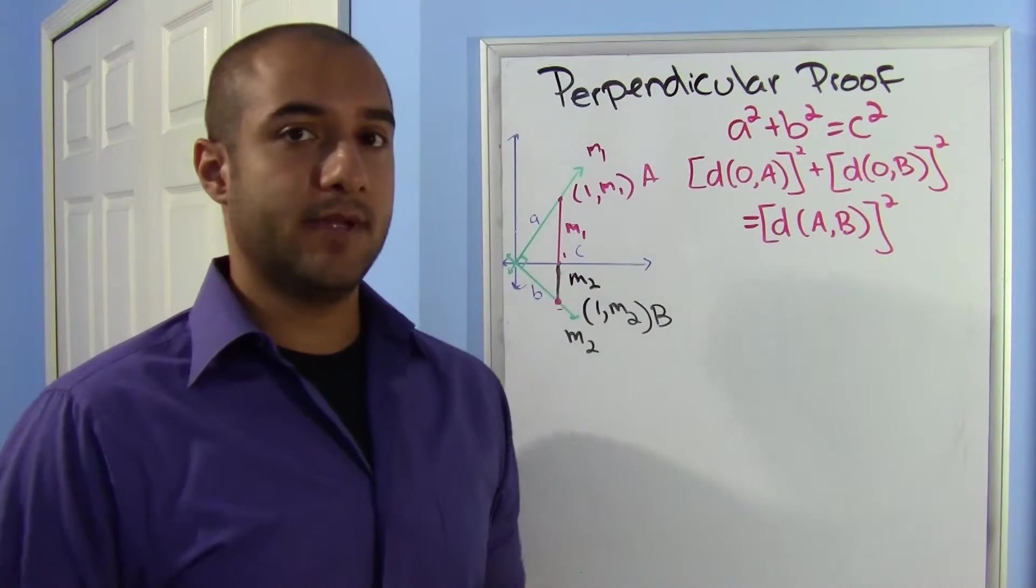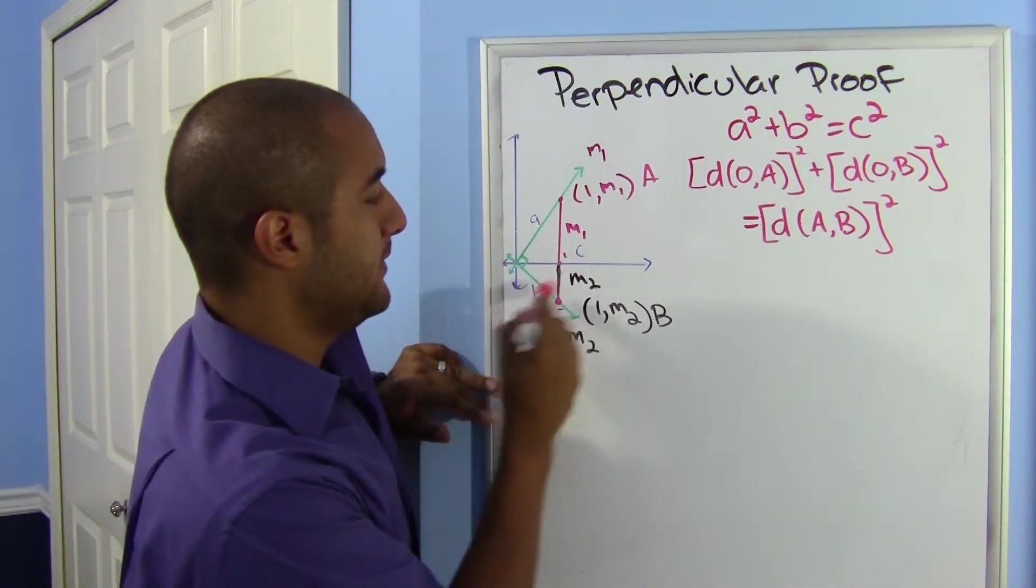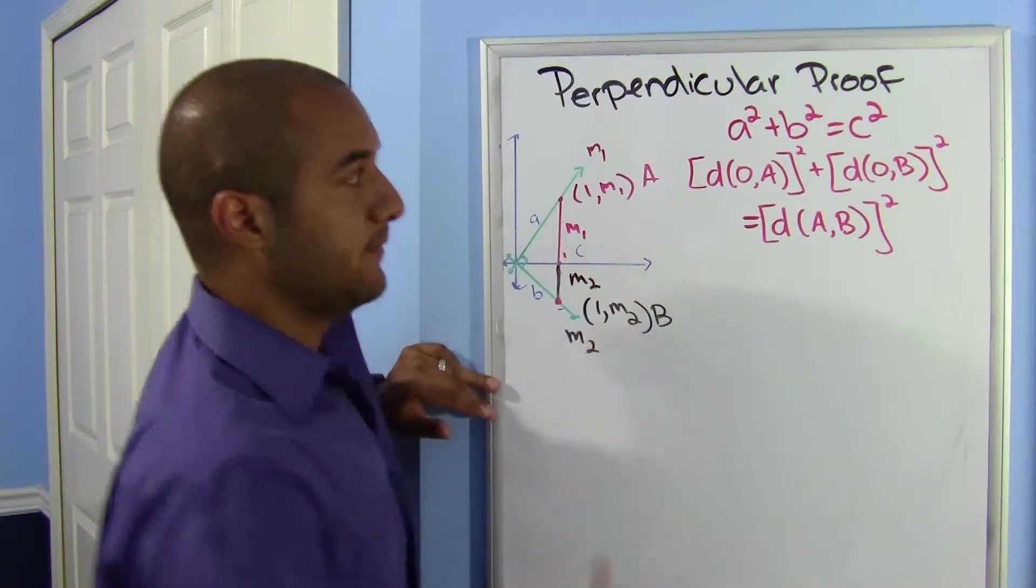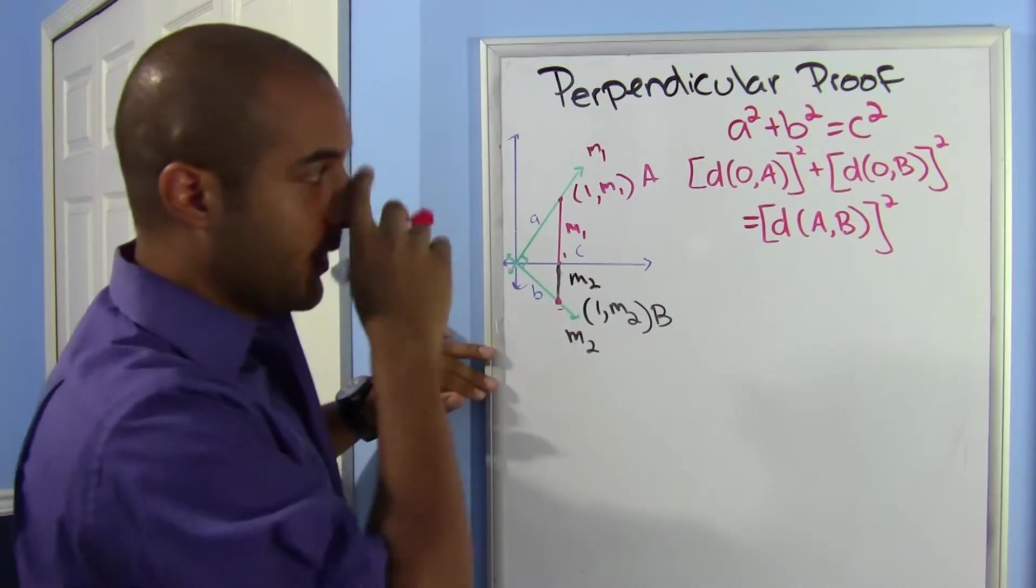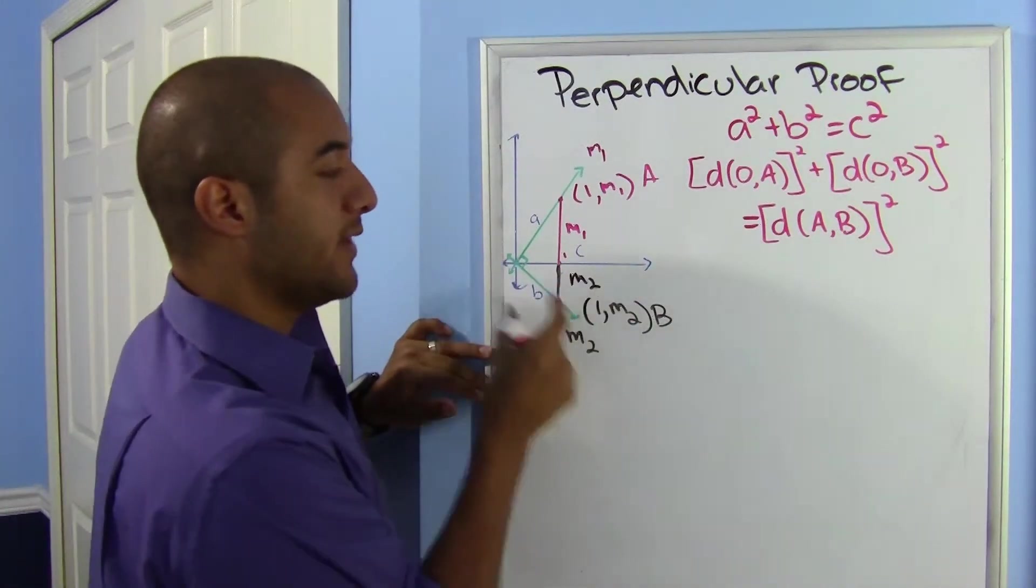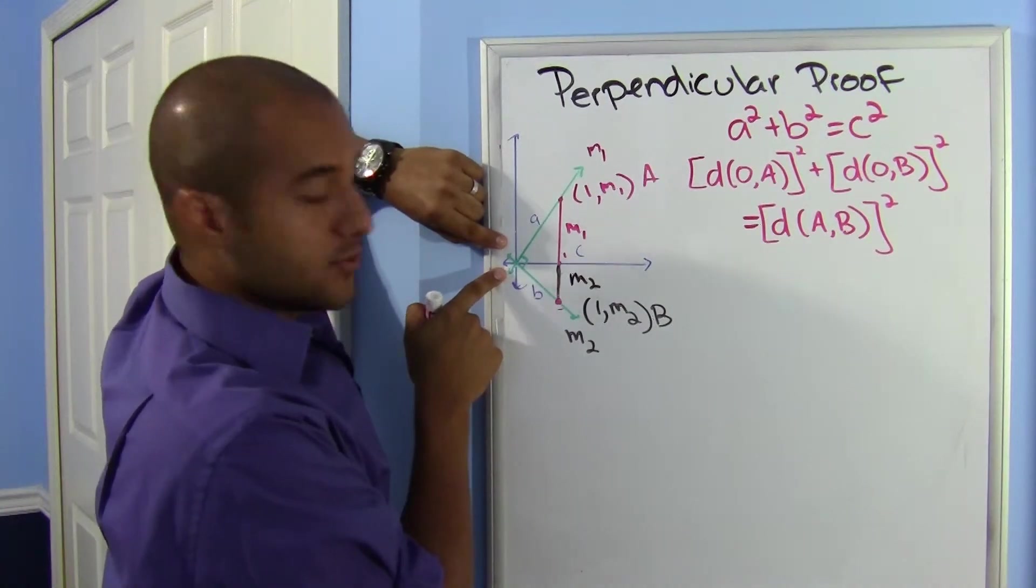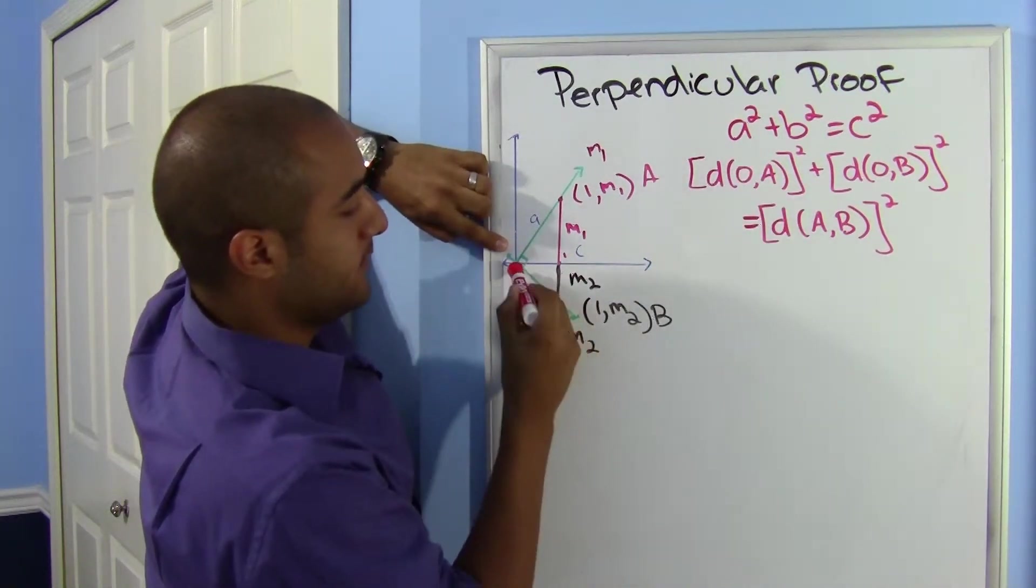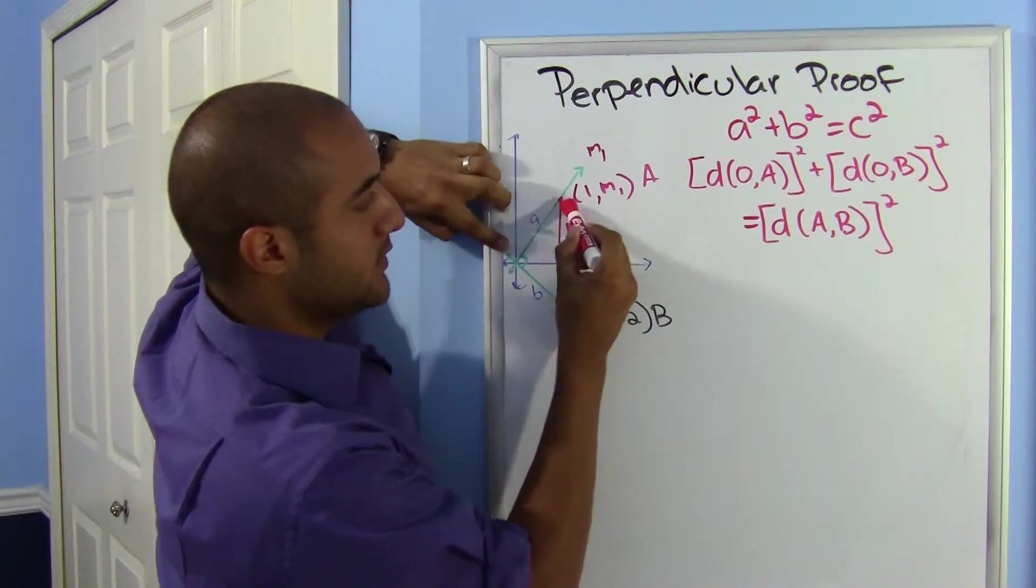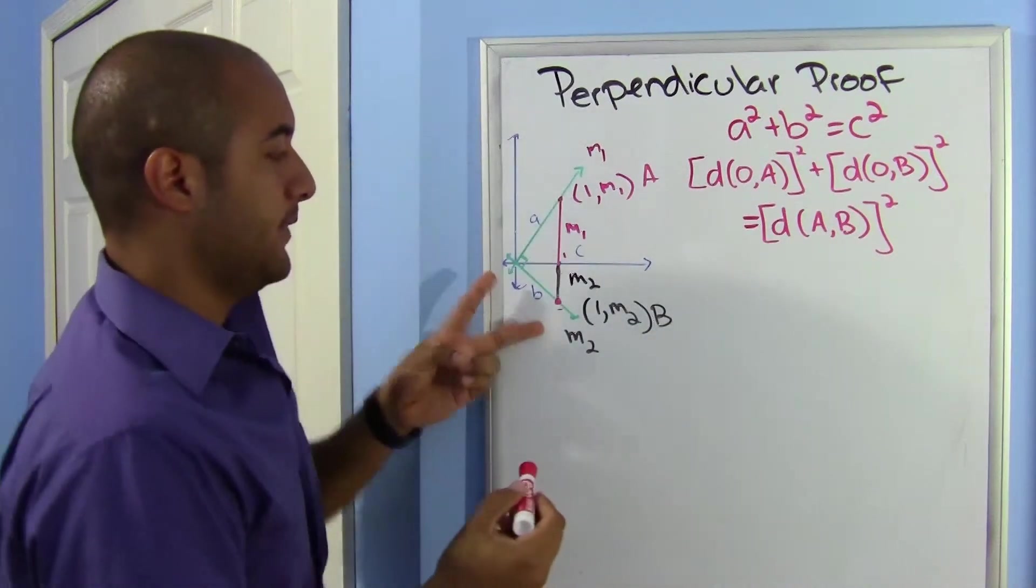All right, some of you already guessed it—yeah, we do have a right triangle here, so we'll be using the Pythagorean theorem. I've named this side a, this side b, and the side c. So we know it's a² + b² = c².